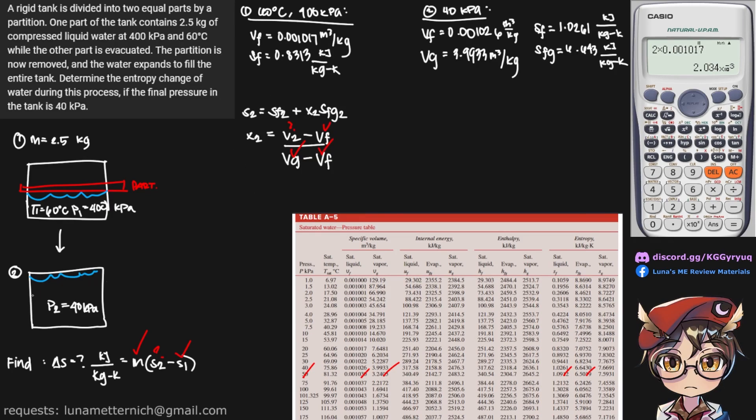So to find our v2, we need to look at our diagram. So once we remove the partition, the water now occupies twice the volume of our rigid tank, meaning v2 is simply twice the volume of v1. And this returns a value of 2.034 times 10 raised to the negative 4, or 0.002034 cubic meters per kilogram.